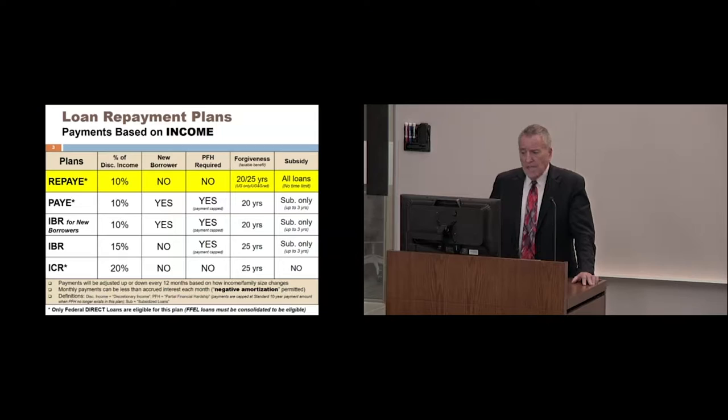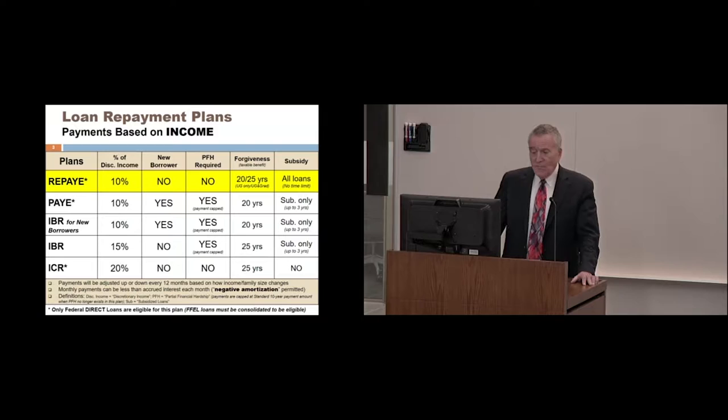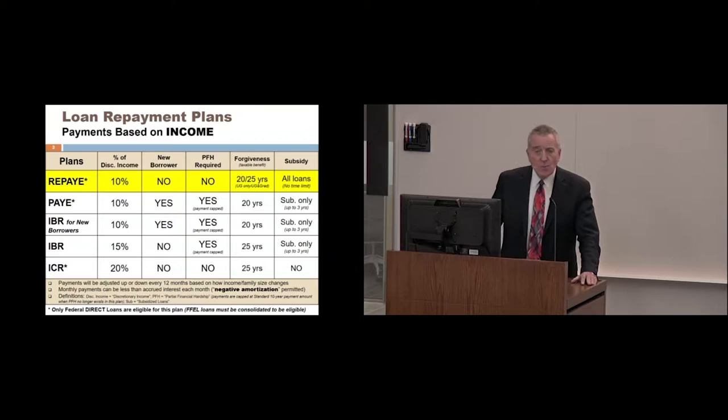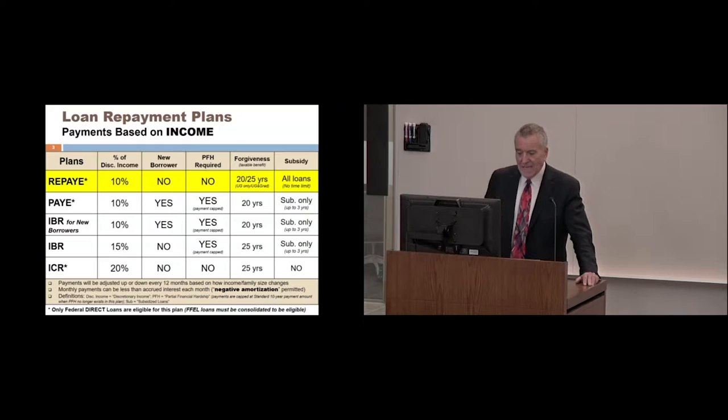The next column in the chart references new borrowers. You don't have to be a new borrower to use REPAYE, but you do have to be a new borrower to use the other two 10% options — and that's an important difference. For the original IBR plan and ICR, you also don't need to be a new borrower. PFH — partial financial hardship — is required in some plans but not in REPAYE. In a subsequent slide we'll explain what partial financial hardship is, because for the other two 10% options and the original IBR plan, partial financial hardship would be required.